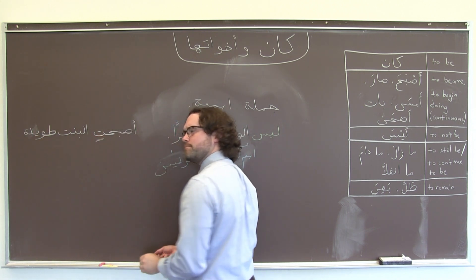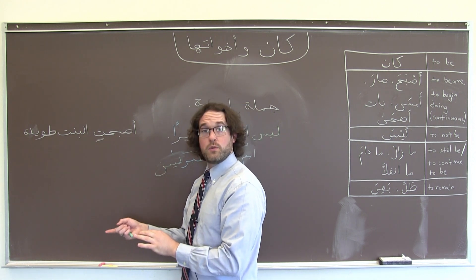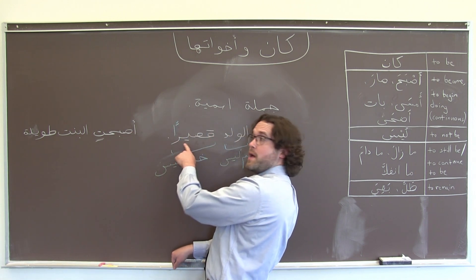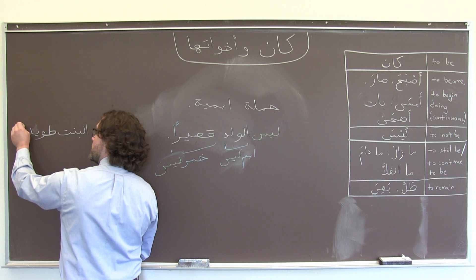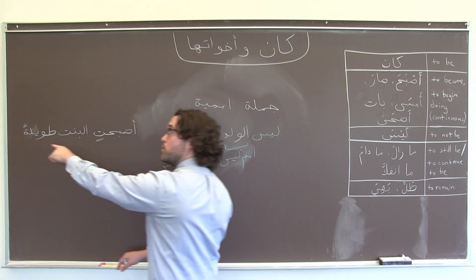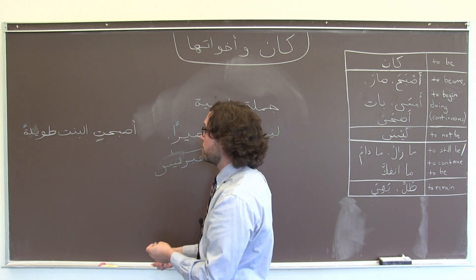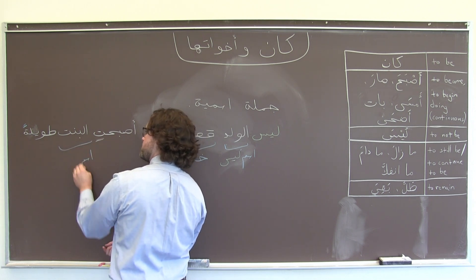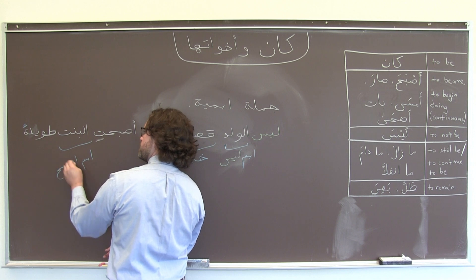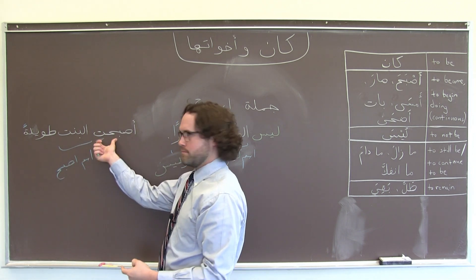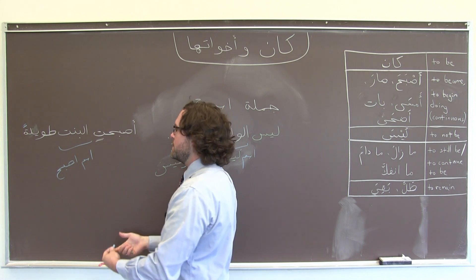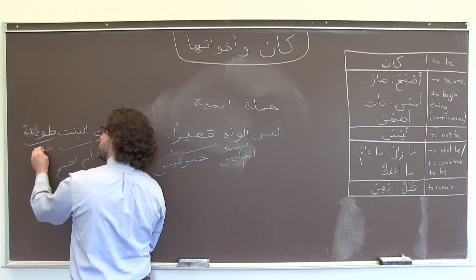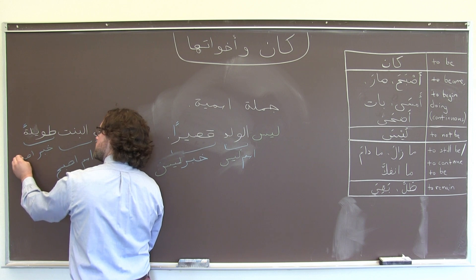أصبحت because بنت is feminine, we're talking about a girl here, and then because we need that منصوب ending, and طويلة is indefinite, I would say طويلة but I wouldn't have an ألف because I have a تامربوطة to mark the feminine ending for the girl. So in a case like this, البنت would be اسم أصبح the subject, the noun, of أصبح, our verb that is sort of the main action in the sentence, and then طويلة would be خبر أصبح.